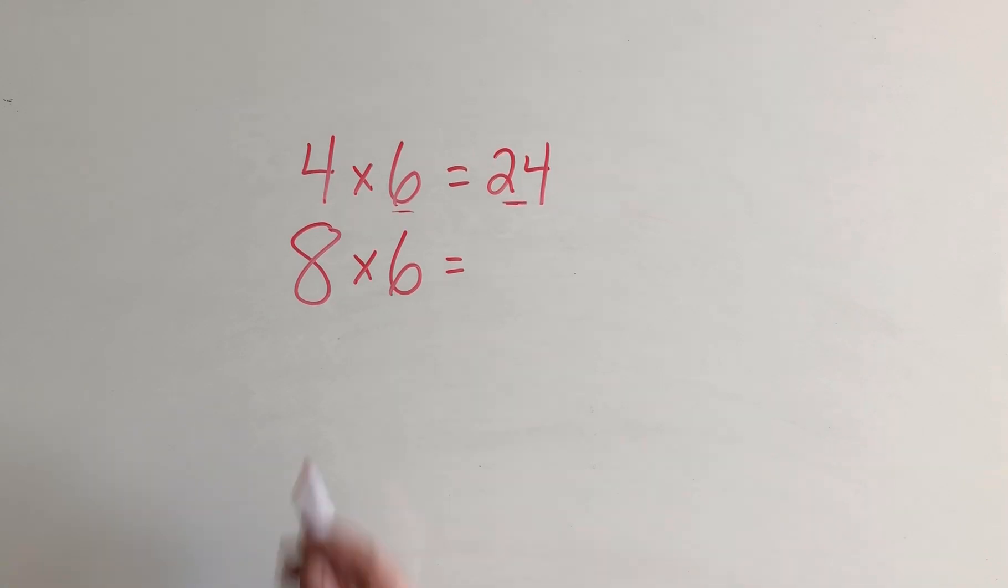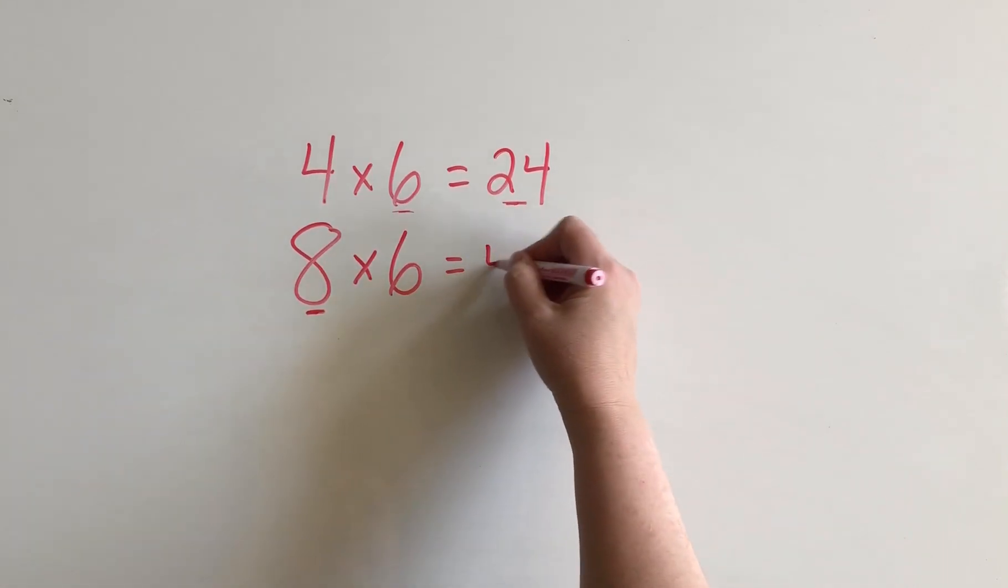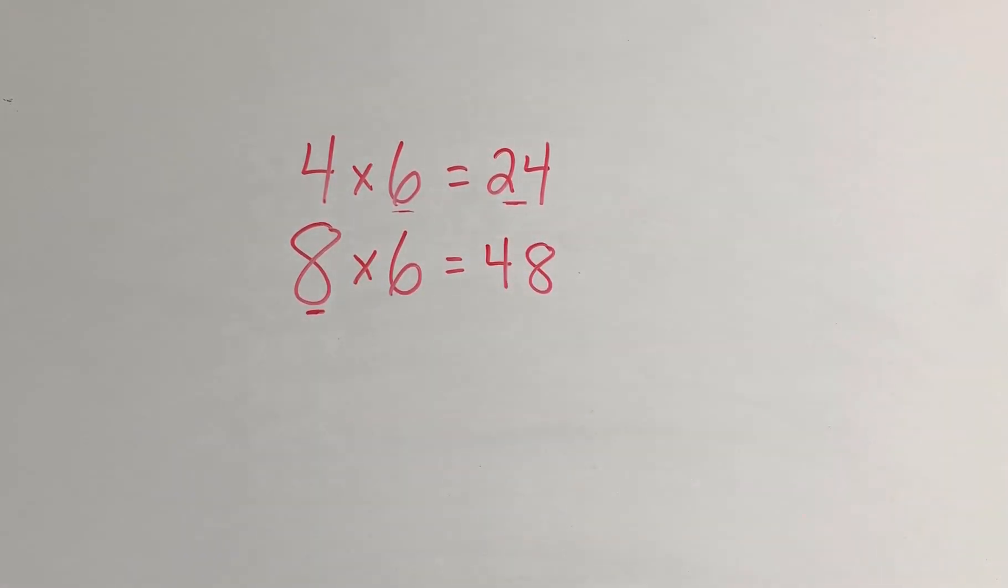Now if I double the amount of rows, I add another 4 rows of chairs, so that now I have 8 rows, then the number of chairs is going to double as well. So I will have 48. So that's one way that we can do the 8's facts. We can use the double of the 4's fact.